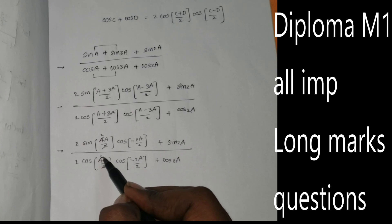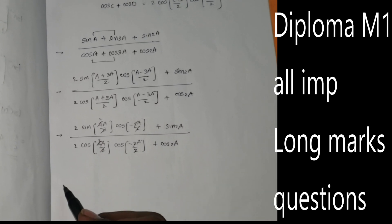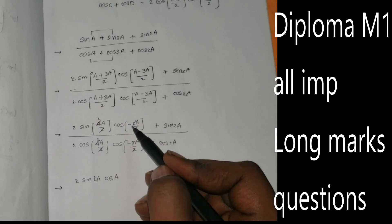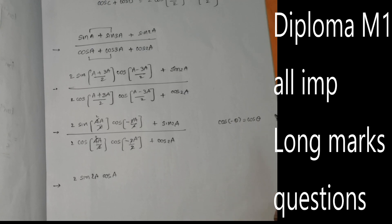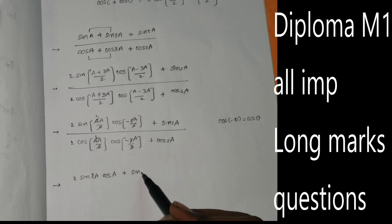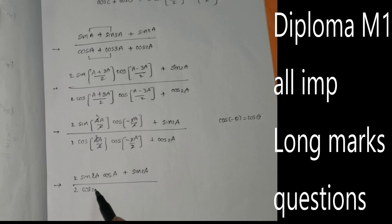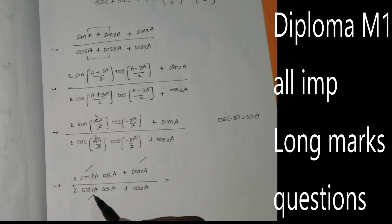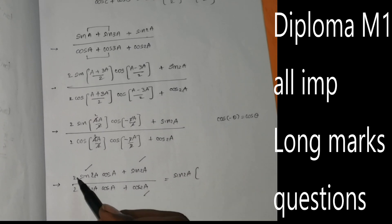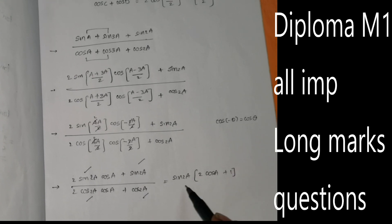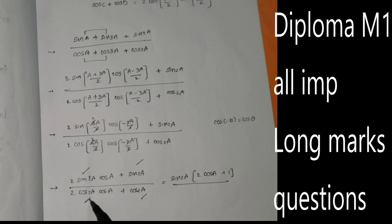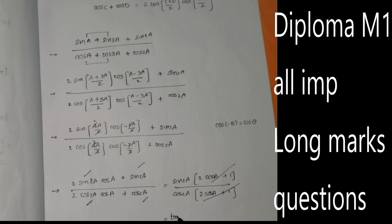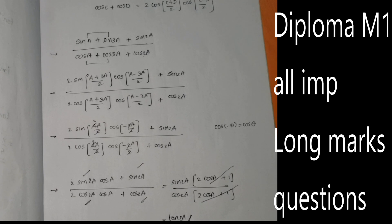We now have 2 sin(2A) cos(A) plus sin(2A) in the numerator, and 2 cos(2A) cos(A) plus cos(2A) in the denominator. Taking sin(2A) common in the numerator gives sin(2A)(2 cos A + 1), and taking cos(2A) common in the denominator gives cos(2A)(2 cos A + 1). The (2 cos A + 1) terms cancel.